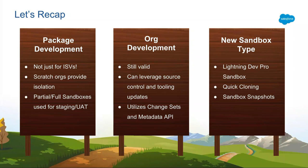So a lot was covered here today and I want to quickly recap. First of all, package development is not just for ISVs. Scratch orgs are the means to develop packages — they provide a truly isolated environment so you can manage all the dependencies you want in your package source. Partial and full sandboxes are still just as useful for package development because you want to test your packages in real-world data scenarios before deploying to your production org. As far as org development goes, it's still very valid — there's no concern that it's one or the other. Some applications you might use package development; some you'll stay with org development.